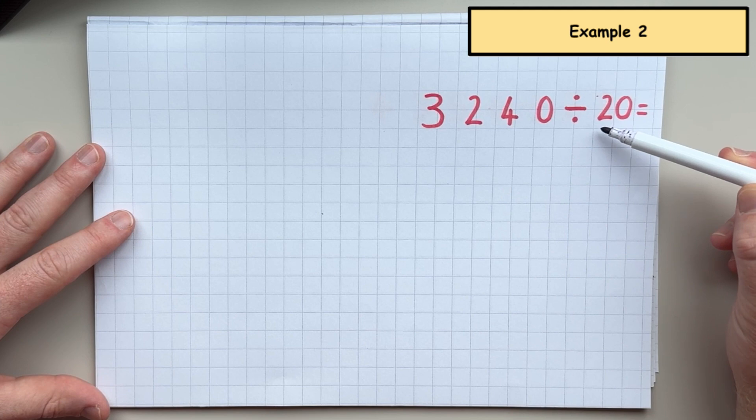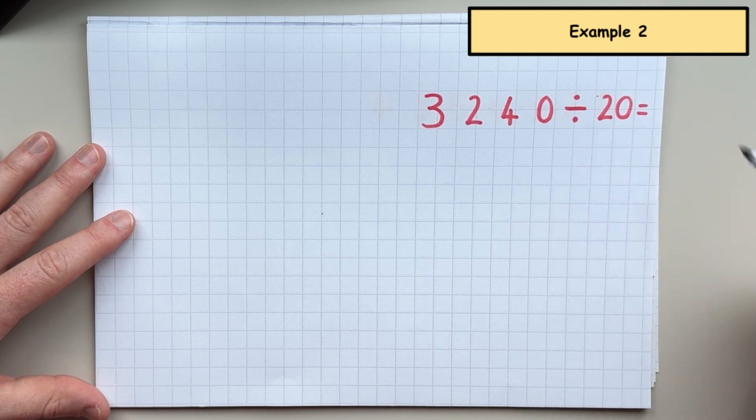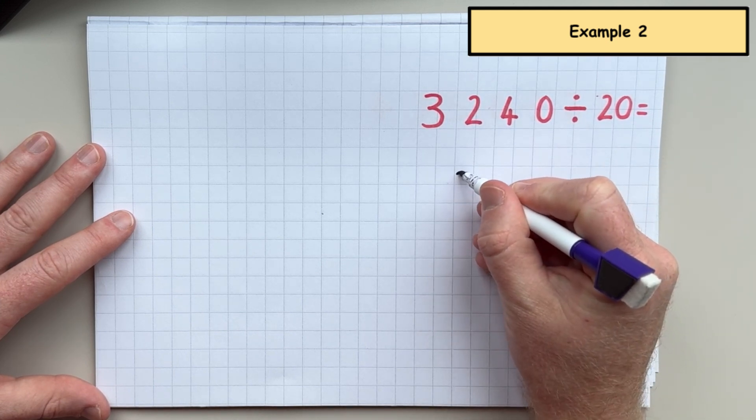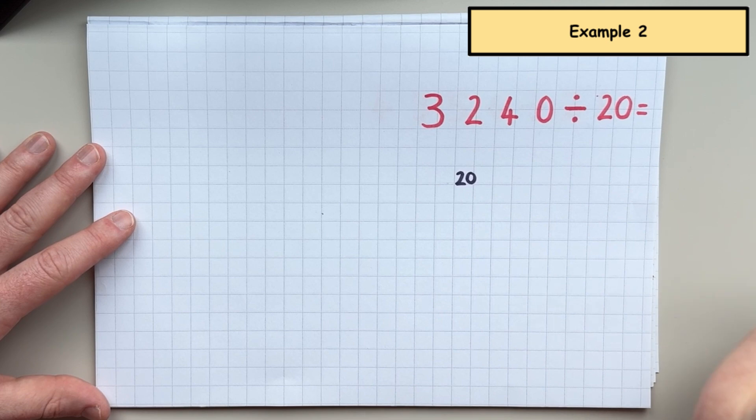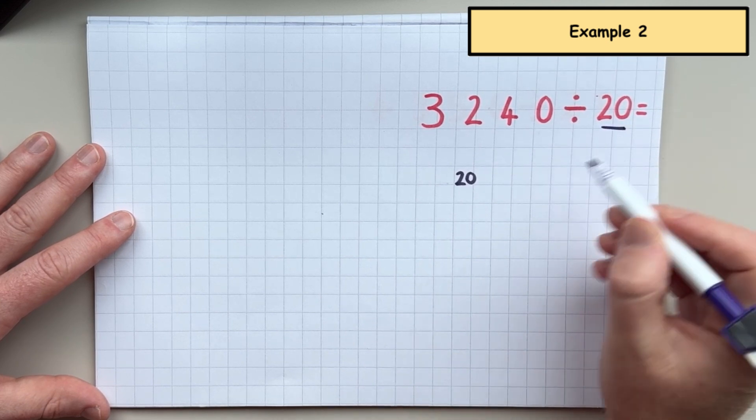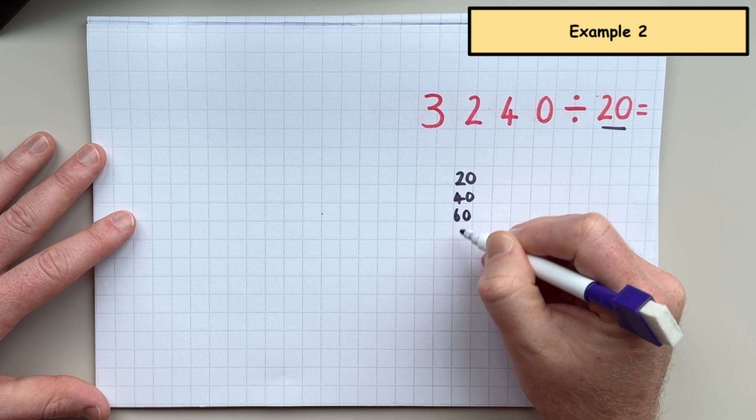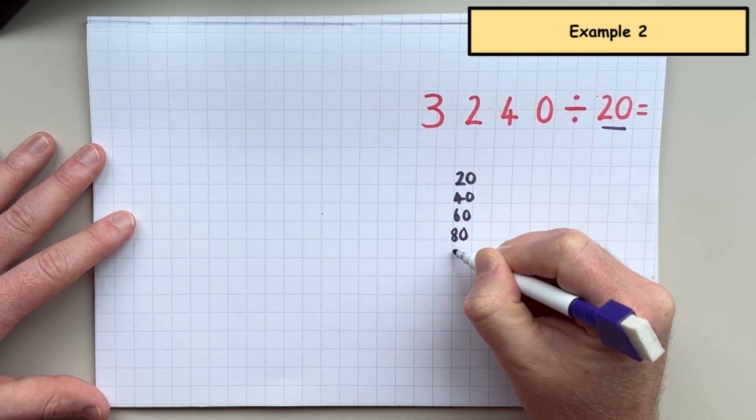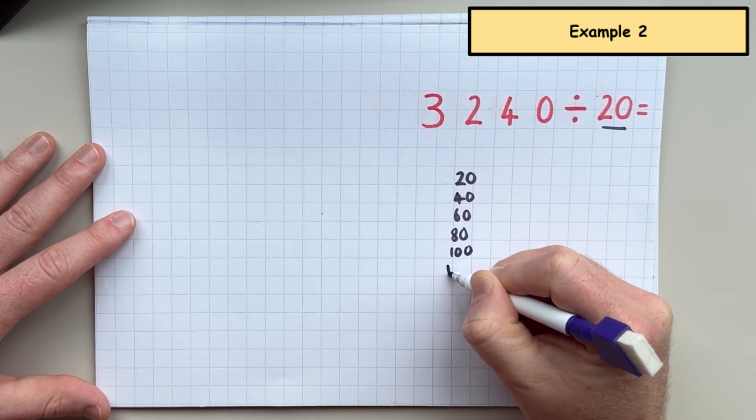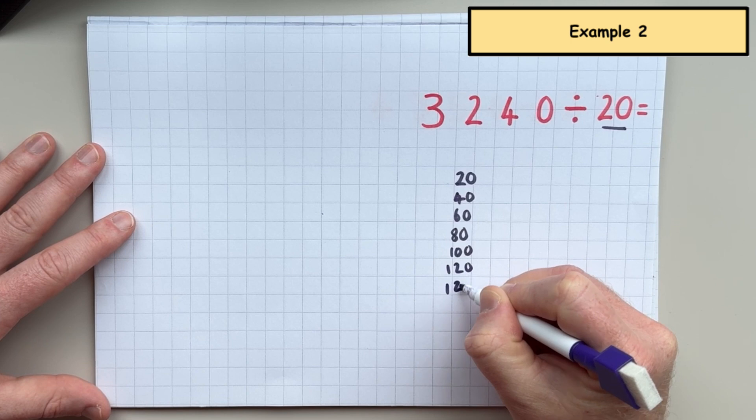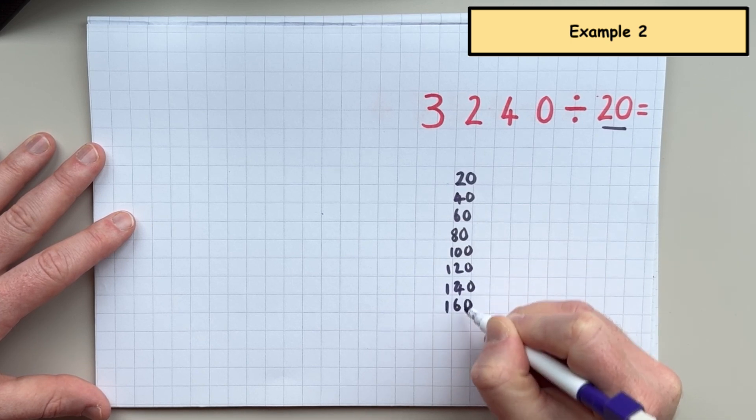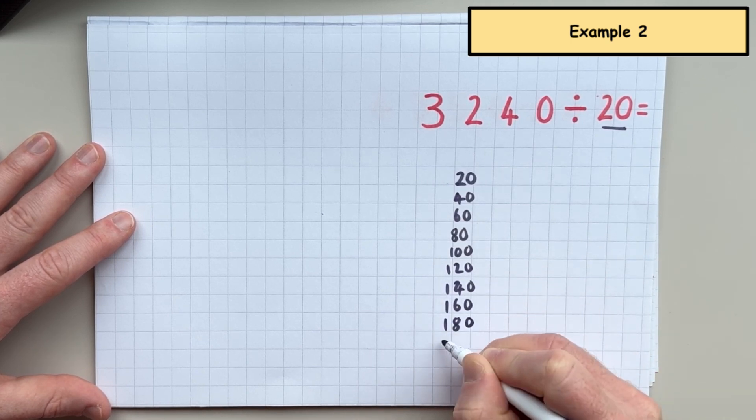So in this next example, we're going to be dividing by a two-digit number. So, again, before the question, even before I even do the question, I'm going to write the 20 times table down the side. So 20, 40, 60, 80, 100, 120, 140, 160, 180, 200.